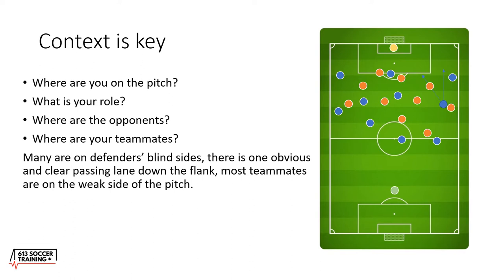Where are your teammates? Many are on the defender's blind side. There's one obvious and clear passing lane down the flank, but most teammates are on the weak side of the pitch. If I wanted to release the pressure and play it back, it would have to be a through ball past those two orange forward players back to my centre back, or I'd expect my right back to step out and show support. The shape of this scenario is lending itself to playing the ball down the flank.